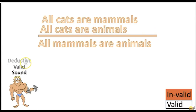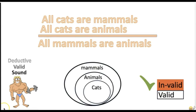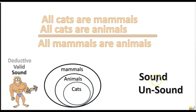Here's another practice problem: 'All cats are mammals. All cats are animals. Therefore, all mammals are animals.' Is this argument valid or invalid? The argument is invalid — the conclusion does not necessarily follow from the premises. Is this argument sound or unsound? It's unsound. All invalid arguments are unsound.